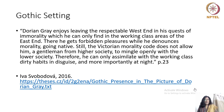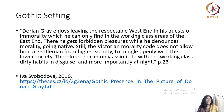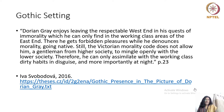Dorian Gray enjoys leaving the respectable West End in his quest for immorality, which he can only find in the working-class areas of the East End. There he gets forbidden pleasures while denouncing morality and going native. Still, Victorian morality does not allow a gentleman from higher society to mingle openly with the lower classes. Therefore, he can only assimilate with the working-class by going in disguise and, more importantly, at night.